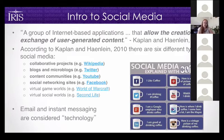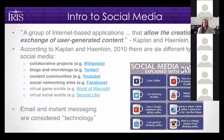The types we deal with for science communication include collaborative projects like Wikipedia, blogs and microblogs like Twitter and WordPress, content communities like YouTube, and social networking sites like Facebook and Twitter — those are our focus today. Email and instant messaging are considered technology, so they don't count in the social media realm.